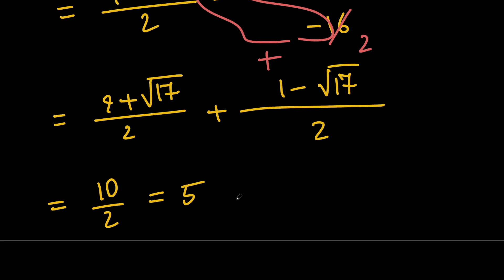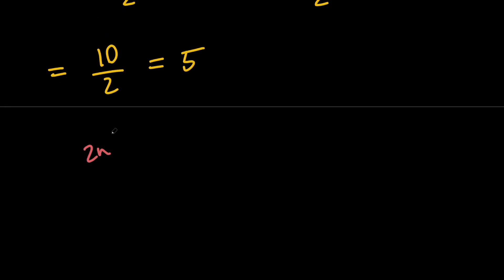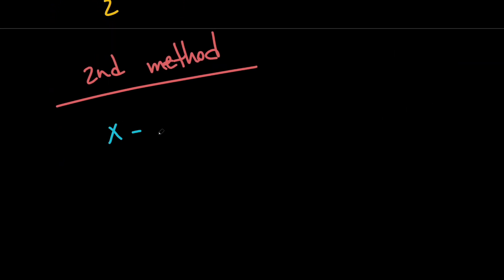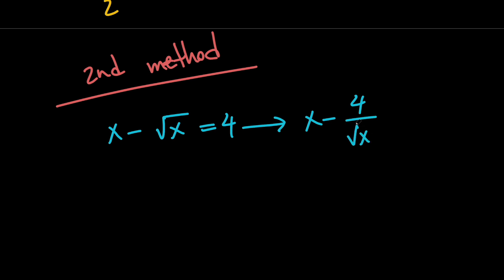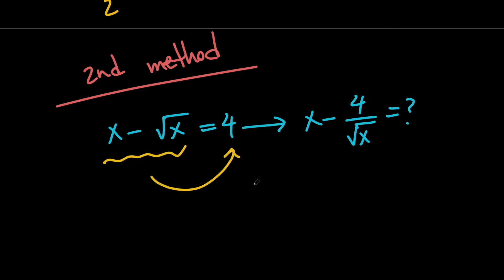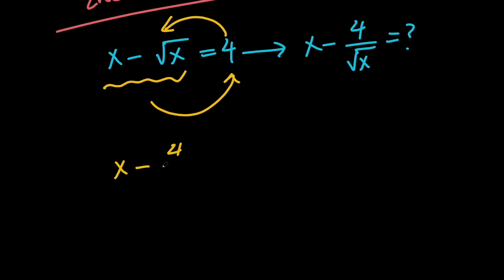Let's go ahead and solve our problem using the second method. In the second method, we're going to use substitution again, but in a slightly different way. We know that x minus root x equals 4, and we want to evaluate x minus 4 over the square root of x. We can replace 4 with x minus root x — so whenever we see a 4, we can replace it with that expression.